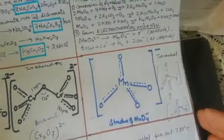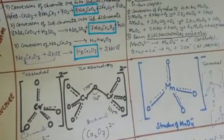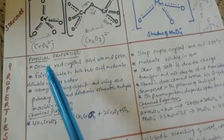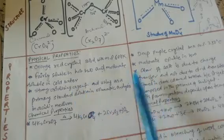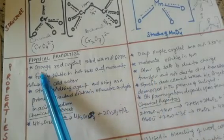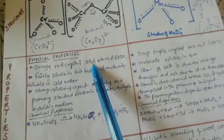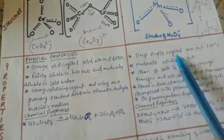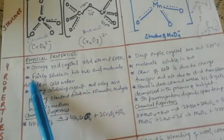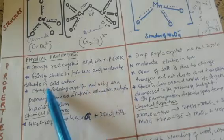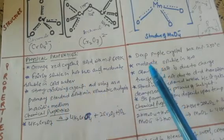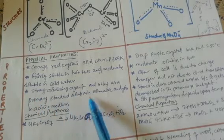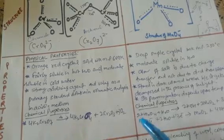Now for physical properties — comparing dichromate and permanganate: potassium dichromate is an orange-red crystalline solid with a melting point of 669 K. Potassium permanganate is a deep purple crystal with a melting point of 250°C. Permanganate is fairly soluble in hot water and moderately soluble in cold water. It is a strong oxidizing agent used as a primary standard solution in volumetric analysis in acidic medium.